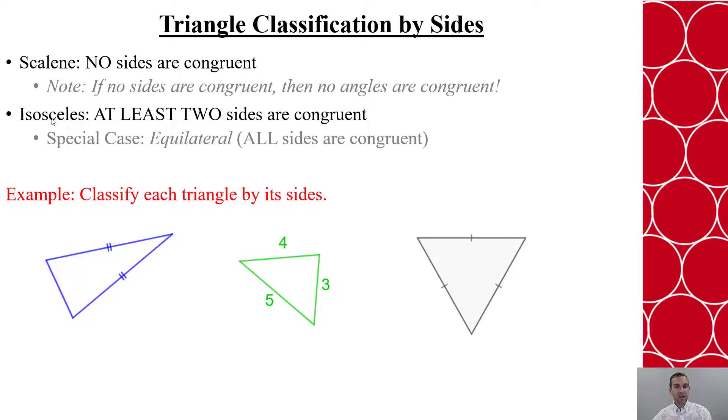So if I look at my three examples here, I have two sides marked as congruent. So this is isosceles. Here, all three sides have different lengths given. So this is scalene. And here, all three sides are marked as congruent. That's at least two congruent sides. So it is isosceles. And if I want to be more specific, I could write it as equilateral. But equilateral triangles are isosceles triangles as well.